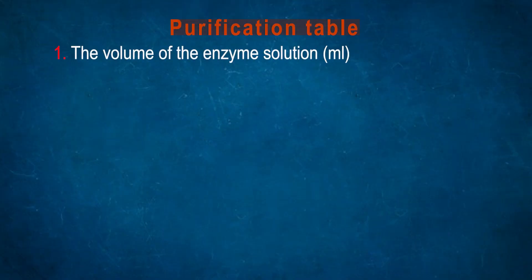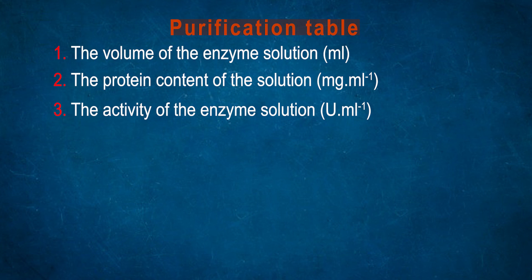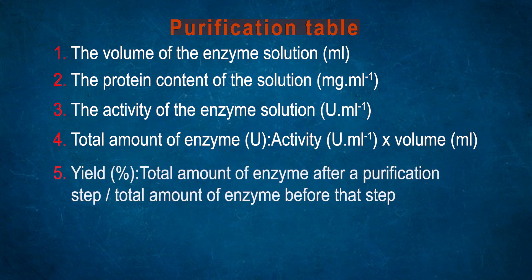Number 1: the volume of enzyme solution in mL. The protein content for protein quantification in mg/mL. The activity of enzyme solution in units per mL. Specific activity, that is units per mL per protein content in mg/mL. Yield percentage: total amount of enzyme after purification step divided by total amount of enzyme times 100.